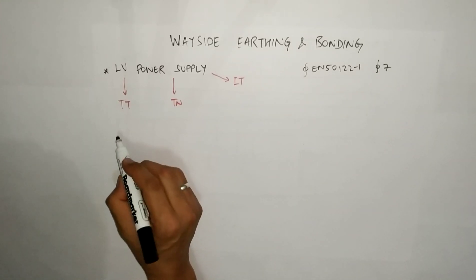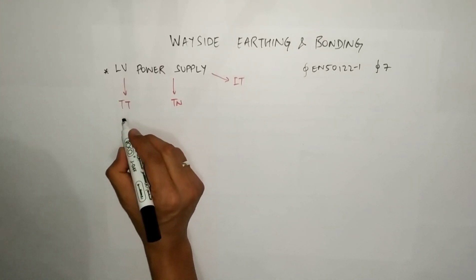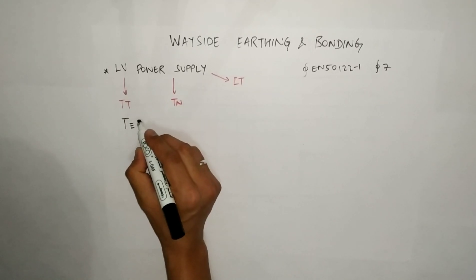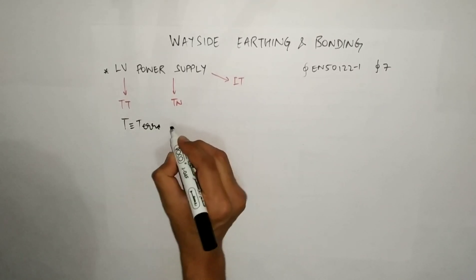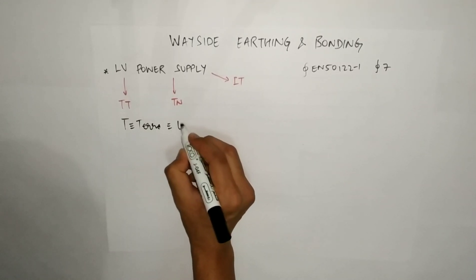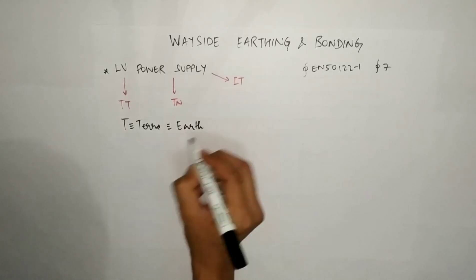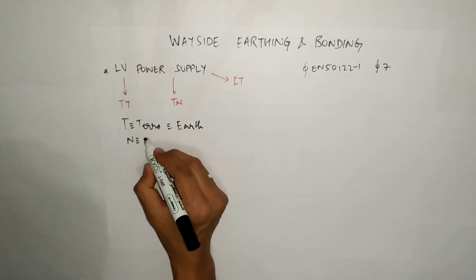T here refers to Terre, which is a French word for earth, and N here refers to neutral.